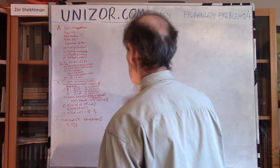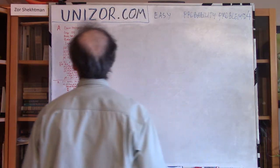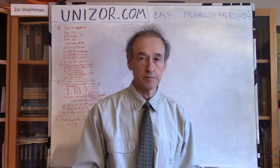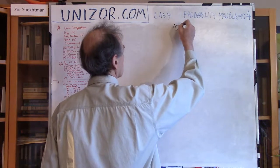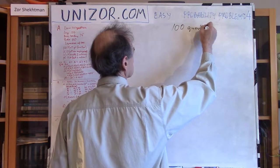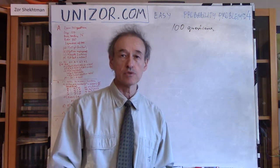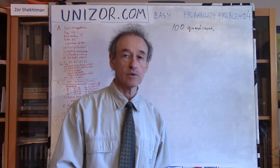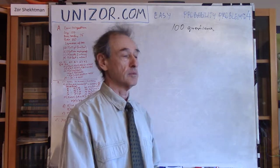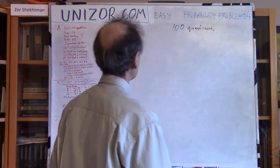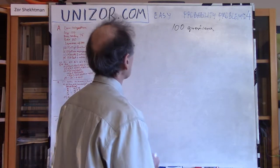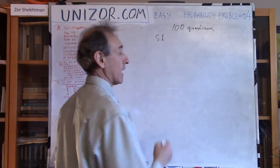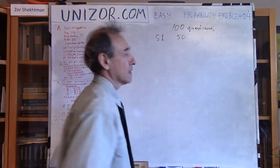Alright, so three problems. Number one. We have three students who are preparing for an exam. The exam contains 100 questions. On the exam, the student comes and basically picks one of these 100. Either he is prepared or he is not prepared for this particular question on the exam. Here is my statistics. The first student, called S1, he is a lazy guy and he is prepared only for 50 questions out of 100.